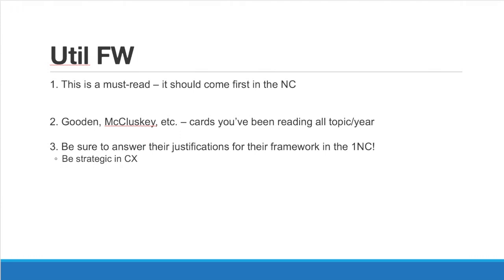The first and most important thing versus any Kant affirmative would be a counter-framework. This is something you have to read and should come first in every negative constructive, because you want to make sure you have a framework you're comfortable with and best suited to have offense under. The util framework can be made up of cards like Gooden or McCluskey, which I think you've been reading for the entire topic or year. These are cards arguing that governments have to use consequentialism, and that rejecting consequences is what results in things like racism.